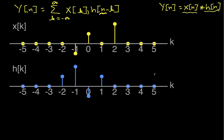The signals we'll use: x of k looks like this — it's basically an arbitrary function I just made up, but it illustrates things nicely. h looks like this; again, it's an arbitrary function I made up. In order to do the convolution, we need to first look at what h of n minus k means.